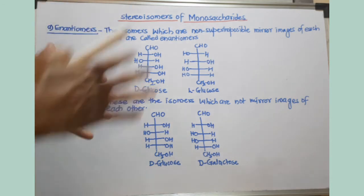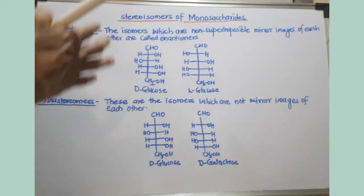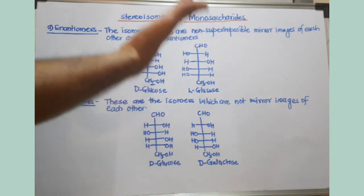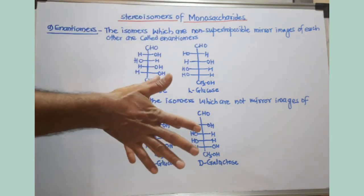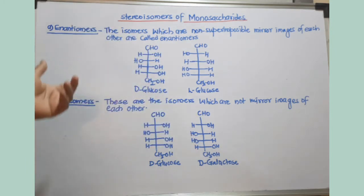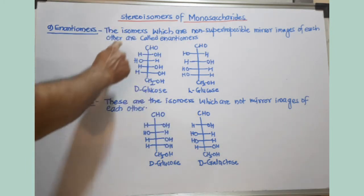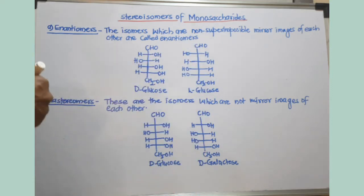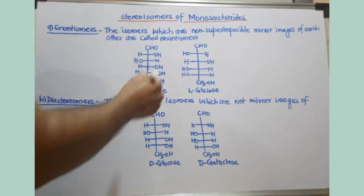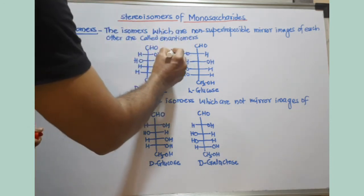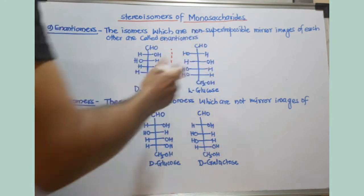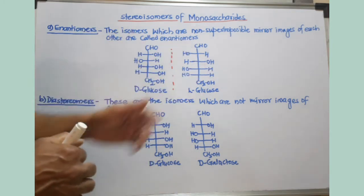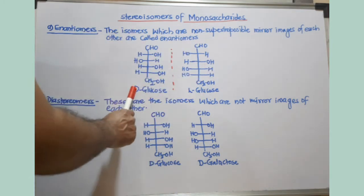What are enantiomers? Enantiomers are the mirror images of each other but the mirror image should not be superimposable. Our right hand and left hand are both mirror images which are non-superimposable — just like D-glucose and L-glucose. You can take any monosaccharide, consider a mirror, and form its mirror image. These two are non-superimposable mirror images.